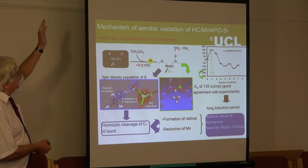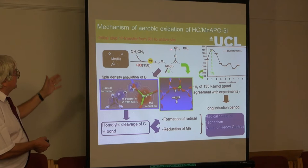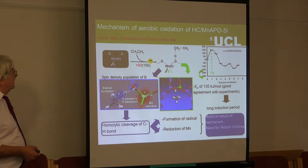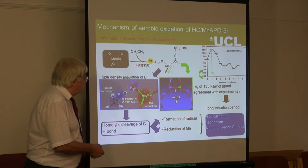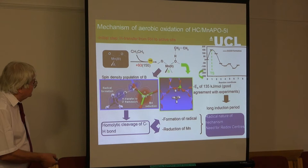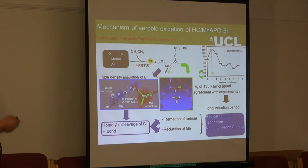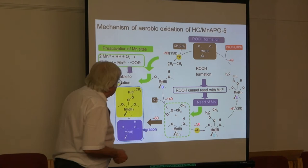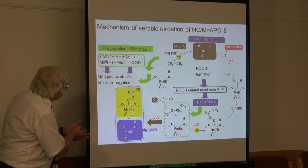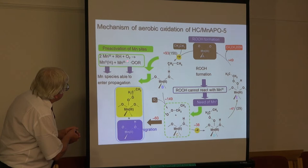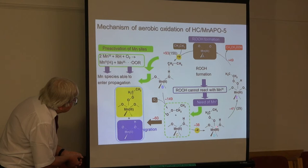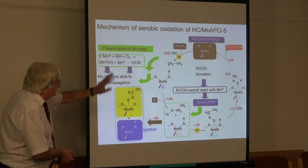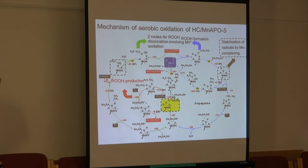The defect site pulls hydrogen off ethane, making an ethane radical loosely bonded to a hydroxyl species. It has a high activation energy, consistent with the experimental long induction period, and there's good evidence it's a radical reaction. In the second stage, the ethane radical picks up an oxygen molecule to form a superoxide radical, which combines with the manganese and re-oxidises Mn2+ back to Mn3+, completing the catalytic cycle, with products including ethanol and other oxygenates.